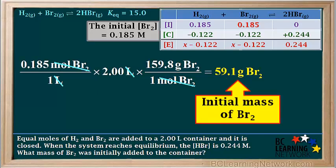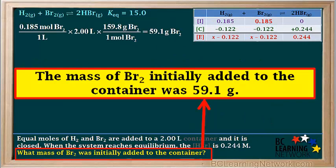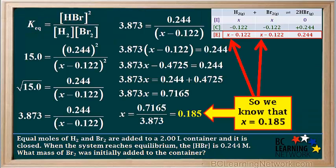Multiplying 0.185 times 2.00 times 159.8 gives us 59.1 grams of Br2. So the initial mass of Br2 is 59.1 grams. We have now answered the question, and can state that the mass of Br2 initially added to the container was 59.1 grams. Even though we've already answered the question, there is a way we can check to see if the value we got for x is correct.